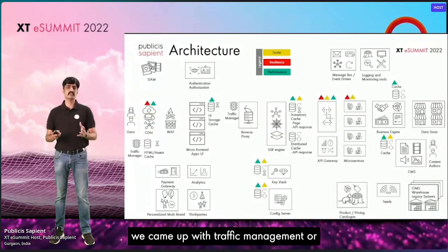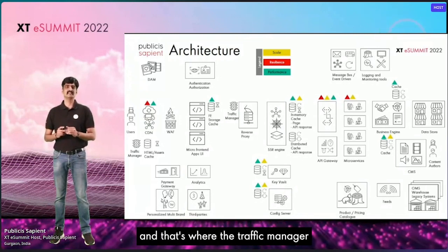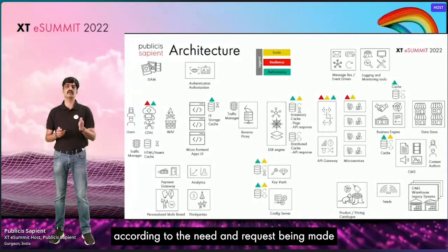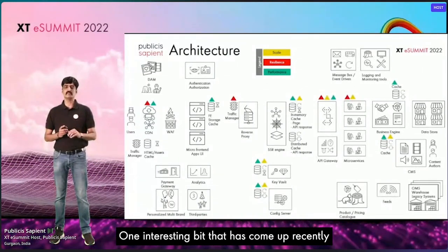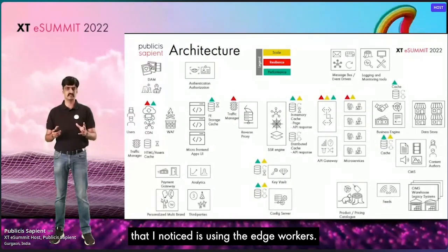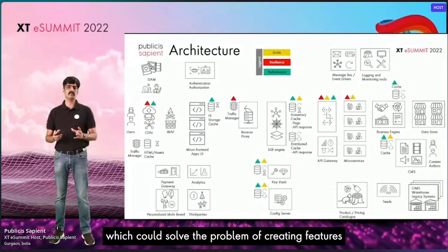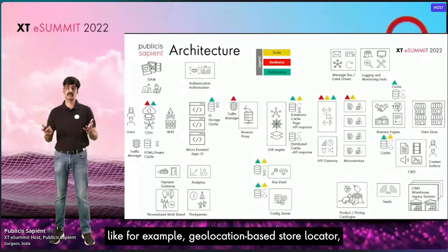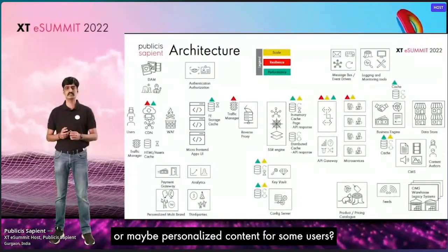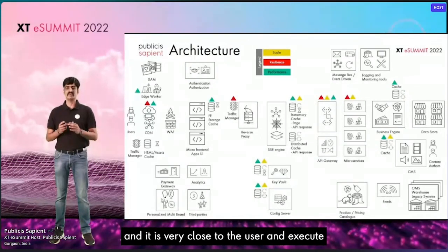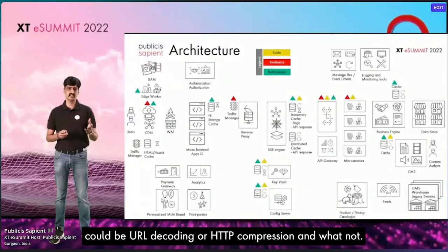When talking about the reverse proxy, we came up with smooth traffic management between client and server machines. Traffic manager helps you divert traffic according to need and requests being made. An interesting element that has come up recently is edge workers. Why do we need edge workers? Think of something like a CDN that could solve problems like geolocation-based store locator, autocomplete-based search, or personalized content for users. Edge workers execute very close to the user. Other executions include URL decoding, HTTP compression, and similar tasks.